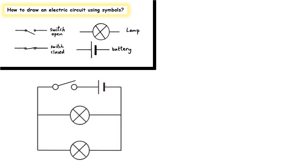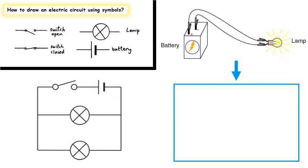Here is the symbol of a lamp, the battery with its positive and negative terminals, the open switch, and the closed switch. Let's try to figure out what this circuit consists of — it is made of a battery, two lamps connected to each other in parallel, and an open switch.